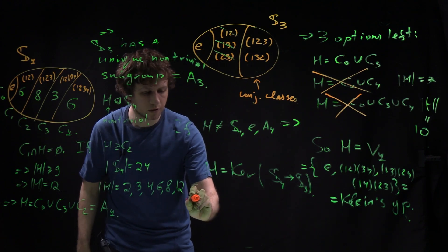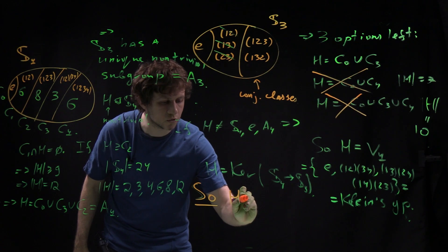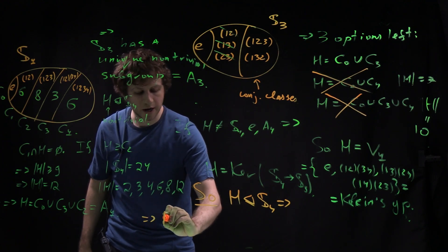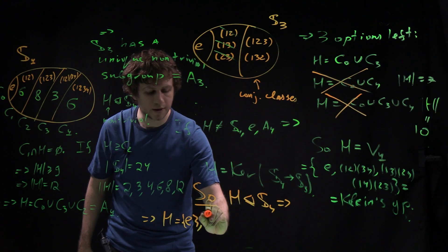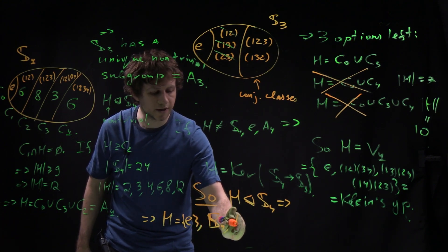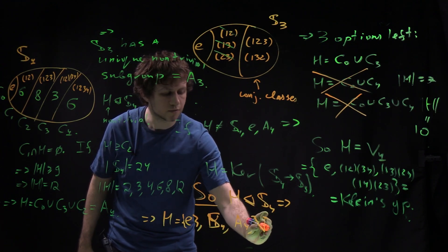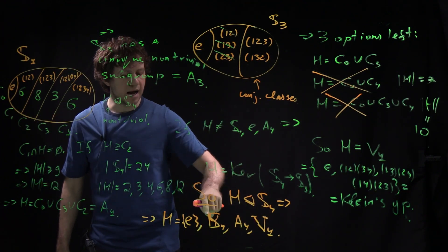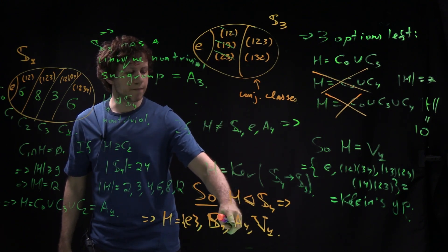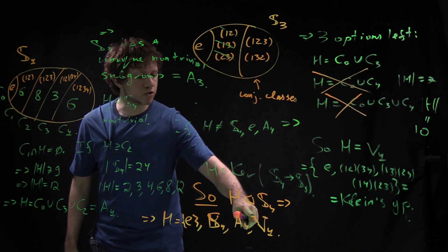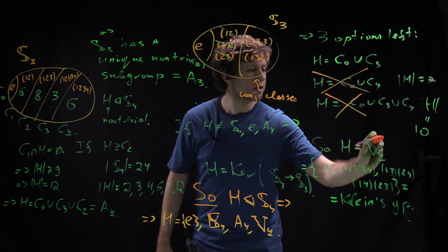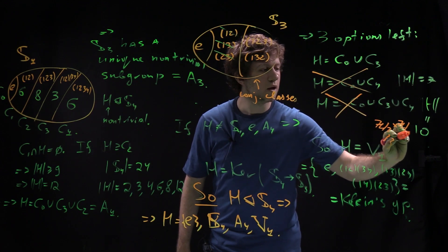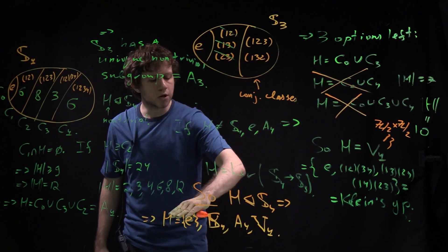So to summarize: if H is normal inside S4, there are exactly four options — H is the identity, the whole group S4, the even permutations A4, or Klein's four-group V4. These are actual subgroups, not just isomorphism classes. As an isomorphism class, V4 is isomorphic to Z/2Z × Z/2Z.